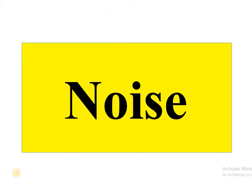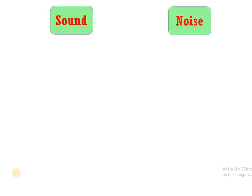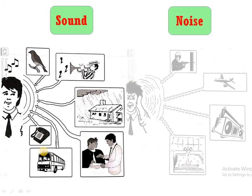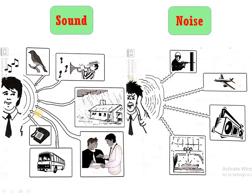Let's understand first what is noise. There are two concepts: sound and noise. The first image shows that in daily life we hear different types of sounds like singing of birds, music, rain, communication, telephone ringing, and transportation. So you can say sound is a part of everyday life.